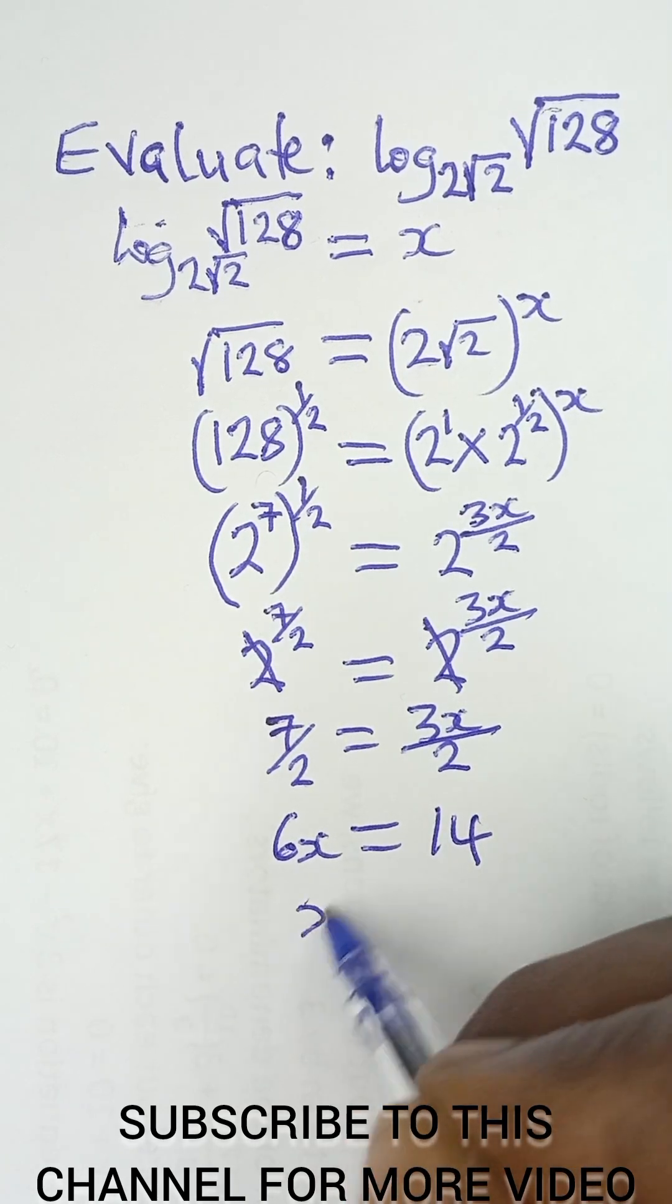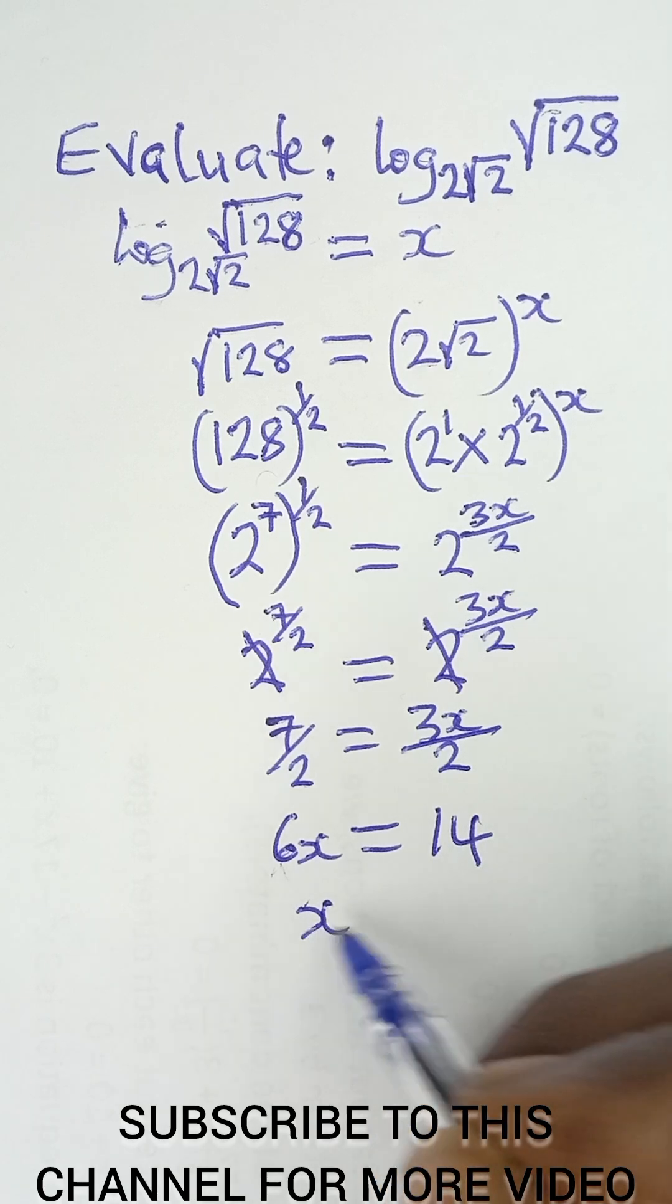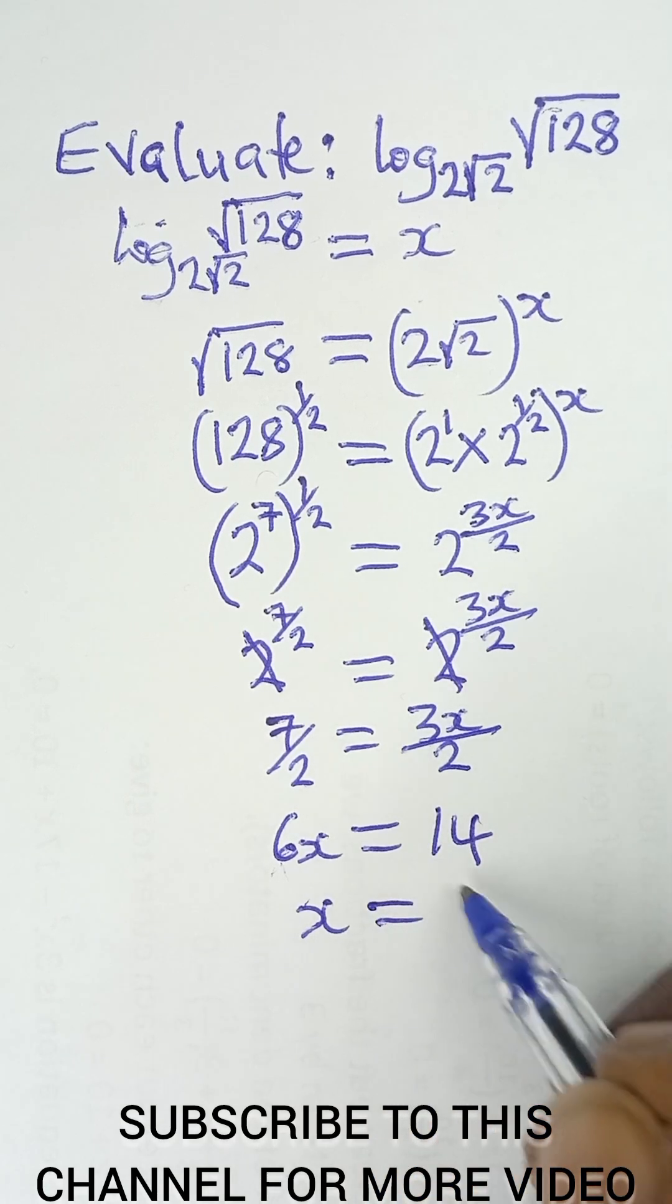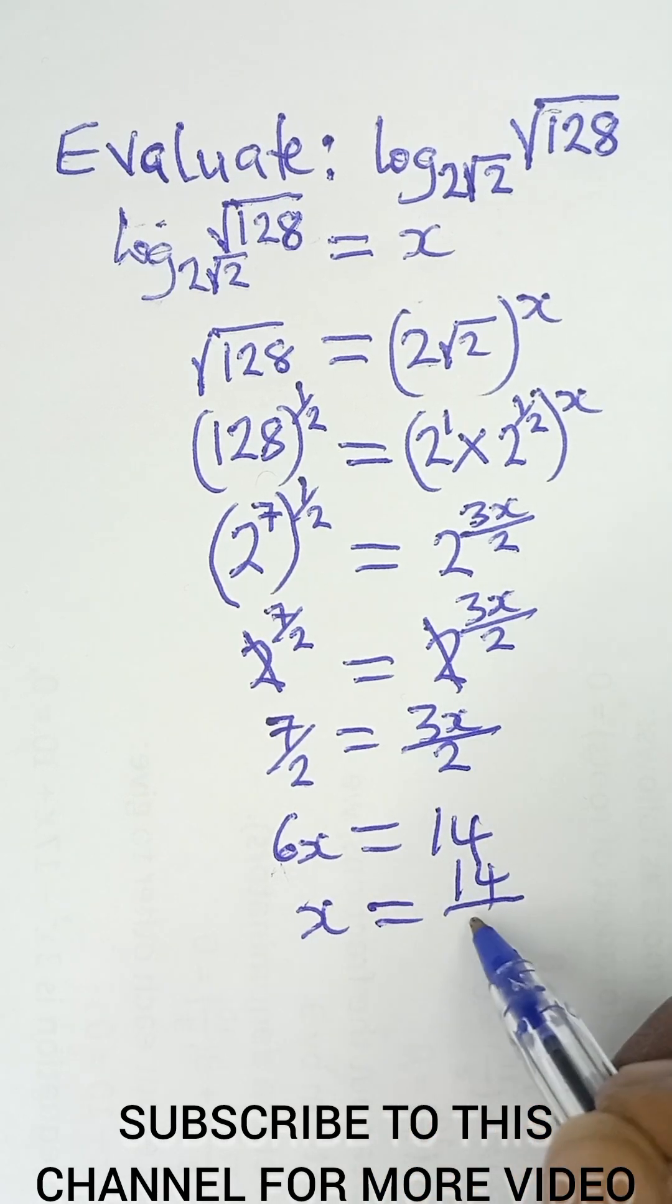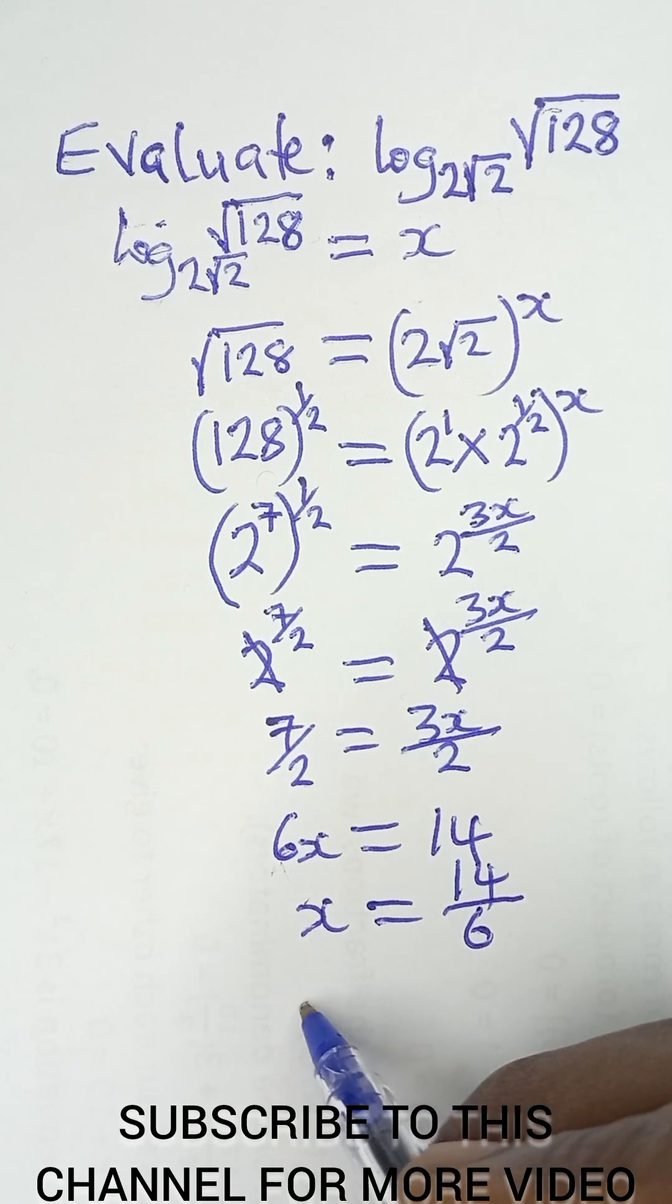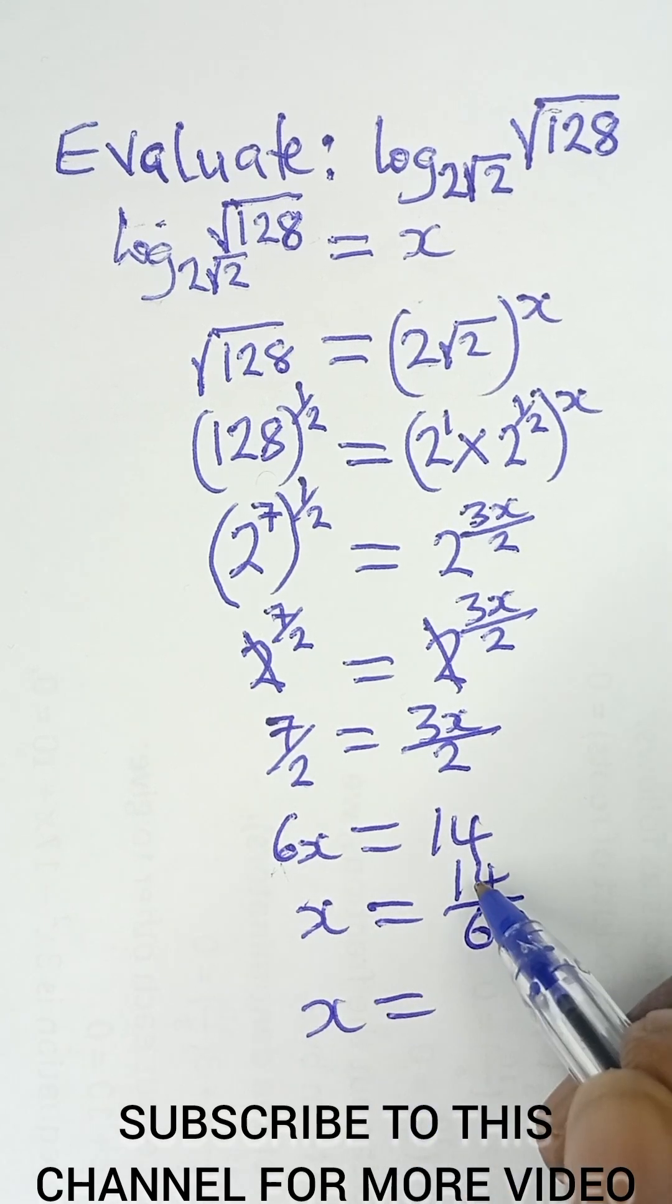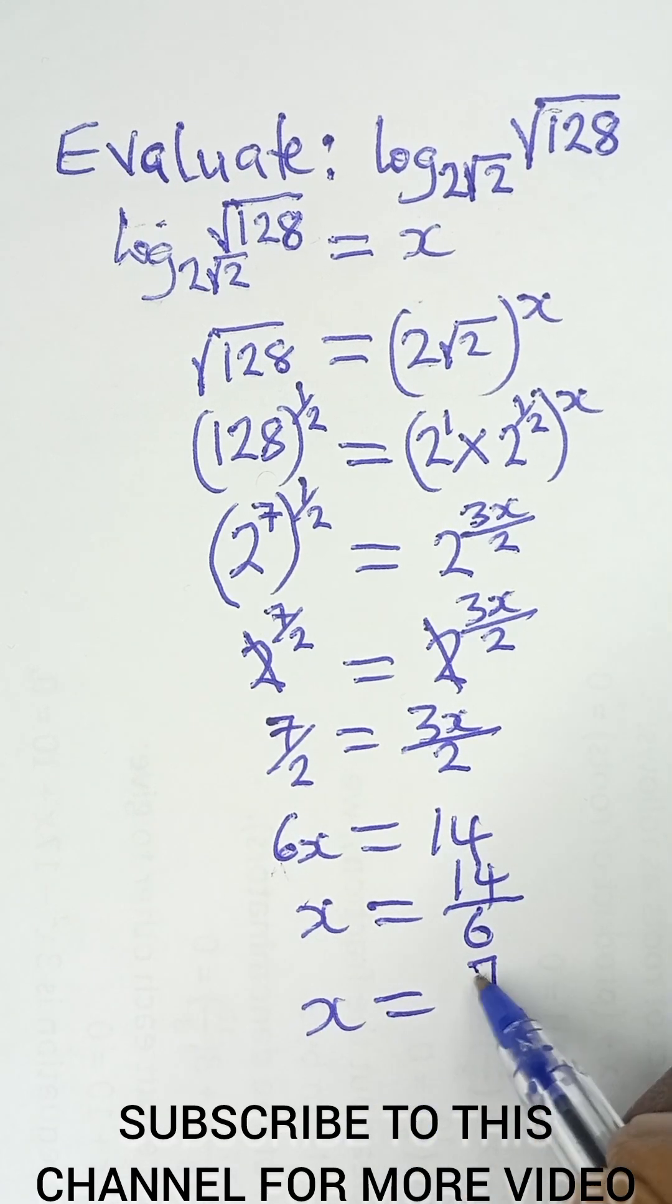Dividing both sides by 6, we get x equals 14 over 6. In lowest terms, 2 in 14 is 7 and 2 in 6 is 3, so 7 over 3 is the final answer.